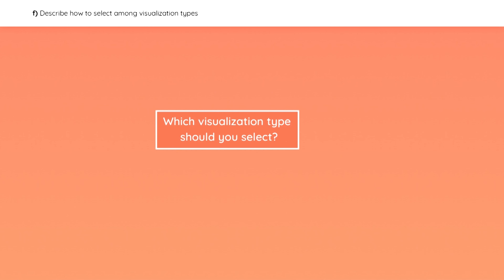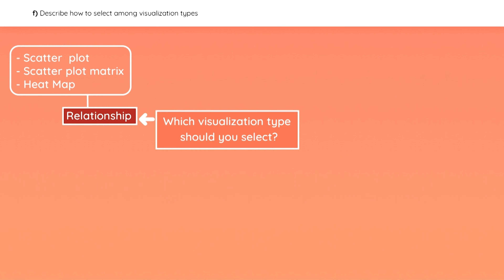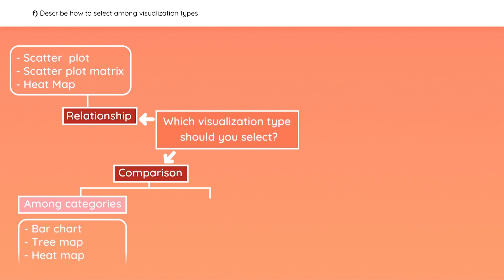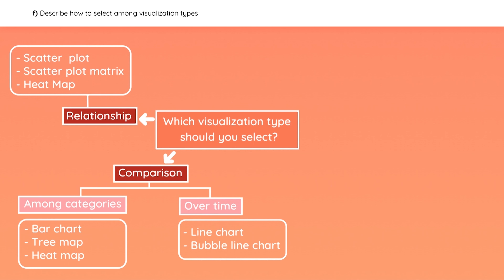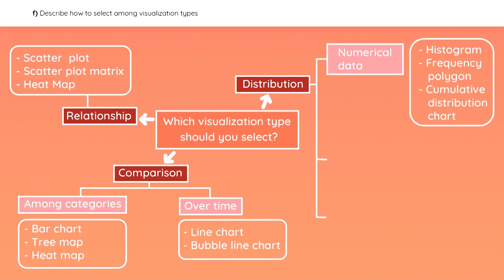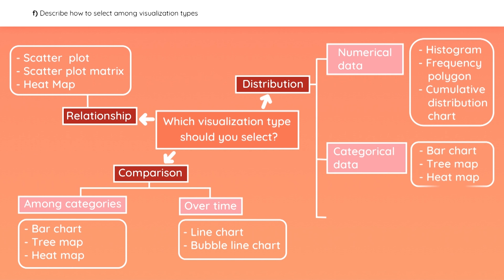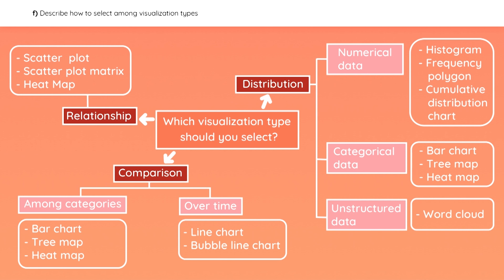So we've covered all these charts and graphs, but how do you know which visualization type to select? It all depends on what you want to analyze or show. To visualize relationships, these are the most appropriate types of graphs. To make comparisons, it depends on whether you are comparing among categories or over time. If you are analyzing distributions, use these chart types for numerical data, these three for categorical data, and a word cloud for unstructured data.